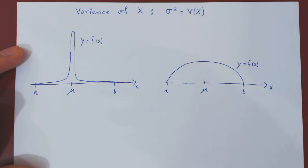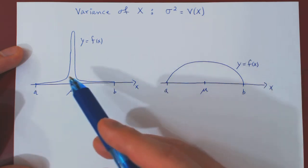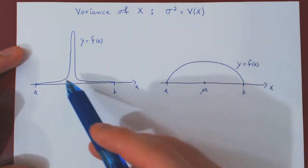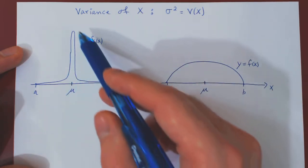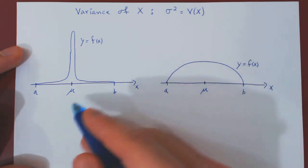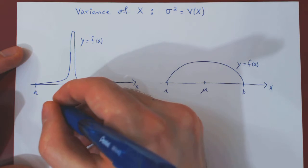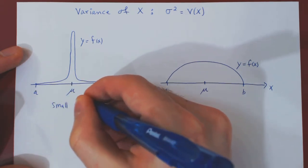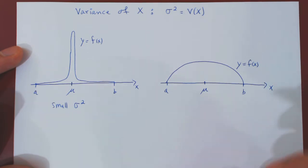And the question is, well, what quantity measures this difference? And the answer is, of course, the variance of X. So, as most of the weight is around the mean, the average value, we would have here a small variance. So, this would be a small value for sigma squared, the variance.